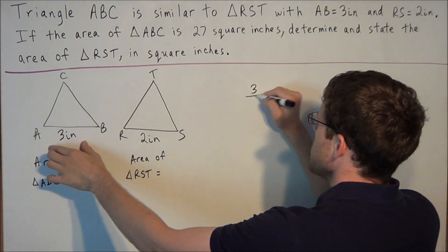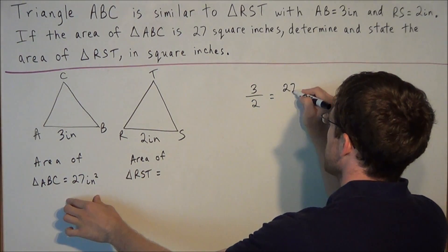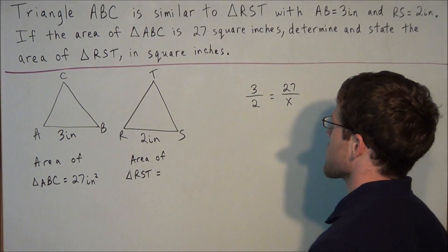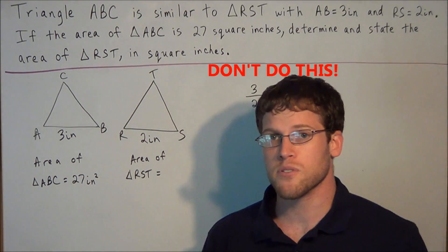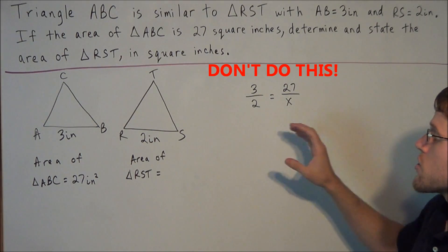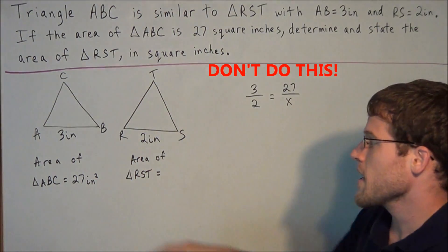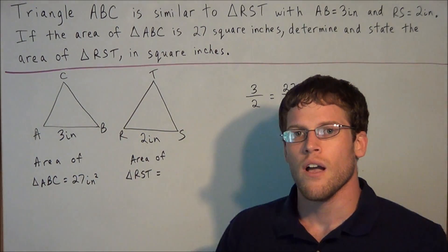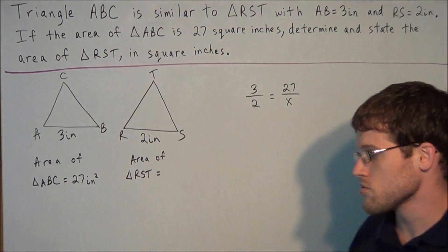So I can set up the ratio of 3 over 2 and set that equal to 27 over X. And this seems like a good idea, but I'm telling you this is absolutely wrong because we are talking about area, which is a two dimensional measurement. So we cannot simply just take this ratio as a one dimensional measurement. We have to make use of a theorem which I'll introduce.